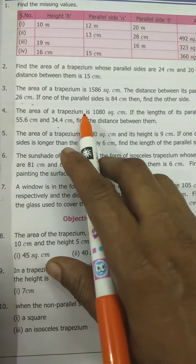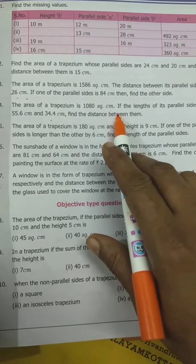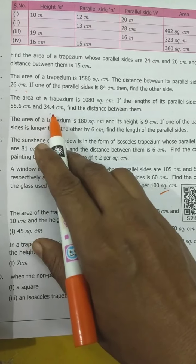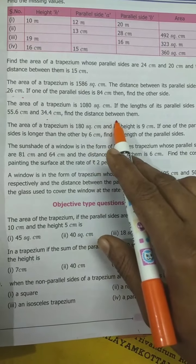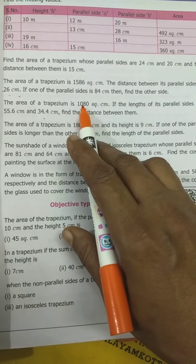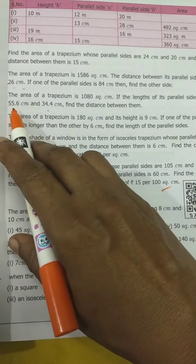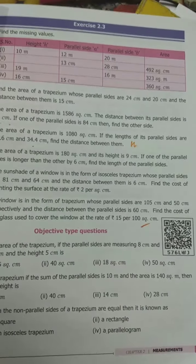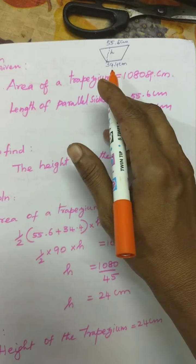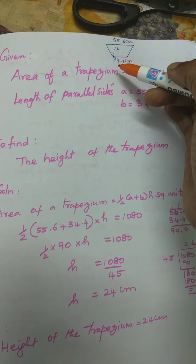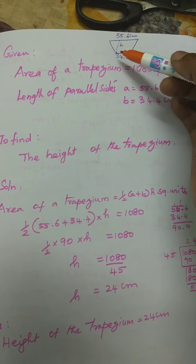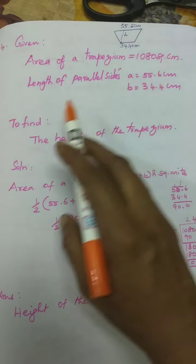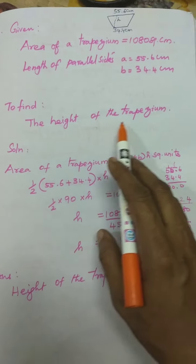Then the fourth sum. The area of a trapezium is 1080 square cm. The length of its parallel sides are 55.6 cm and 34.4 cm. Find the distance between them. They are given the area and parallel sides A and B. You have to find the distance between them, that is H.